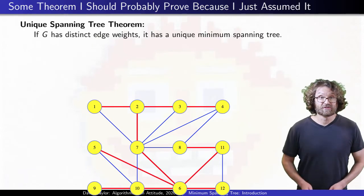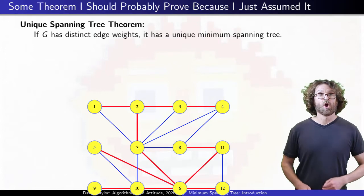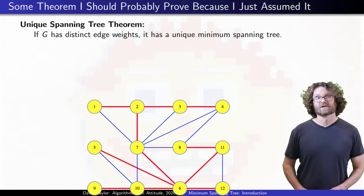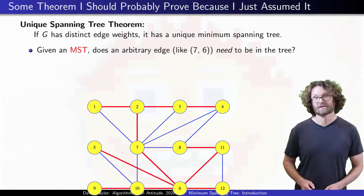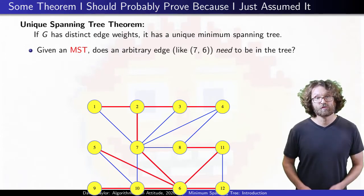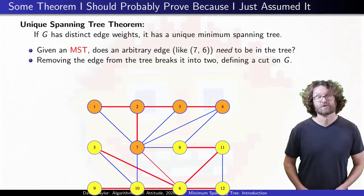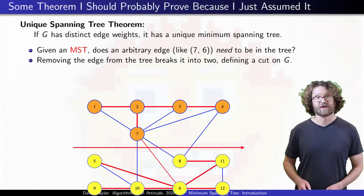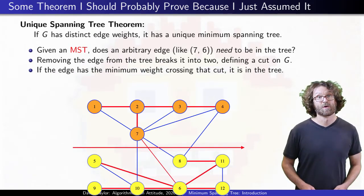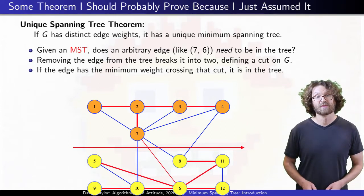If this animation shows a minimum spanning tree in red, grab an arbitrary edge like the one between 7 and 6, and ask if it needs to be in the tree. Removing it from the tree breaks the tree into two parts. Use them to define a cut in the graph. If 7 and 6 is the minimum weight edge crossing that cut, it has to be in any minimum spanning tree, by the proof of the first theorem.